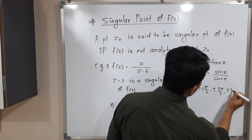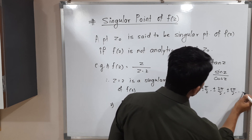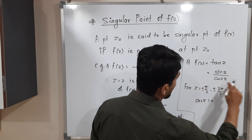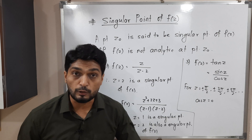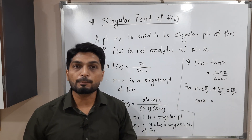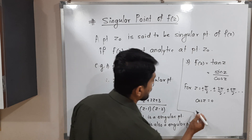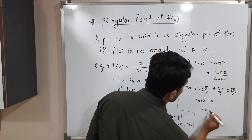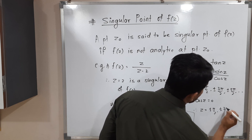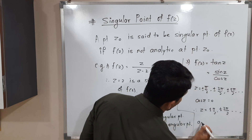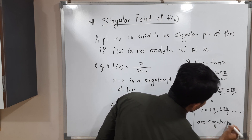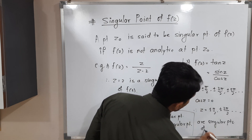For these values of z, cos z will be 0. That means the denominator will be 0, and that is why all these are singular points of f of z. Therefore, z is equal to plus minus pi by 2, plus minus 3 pi by 2, and so on are singular points of f of z.